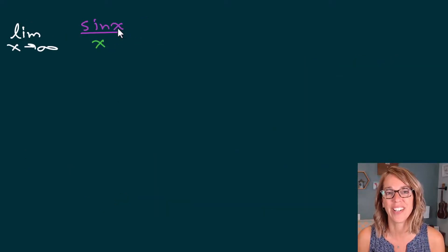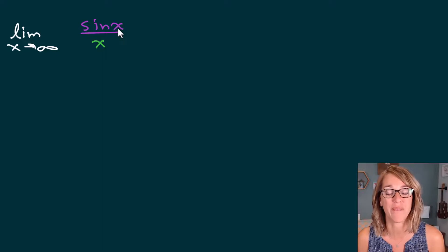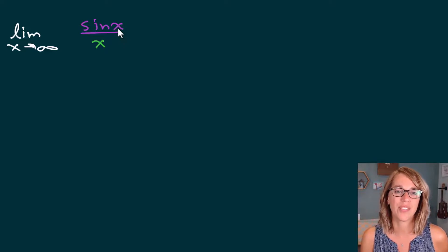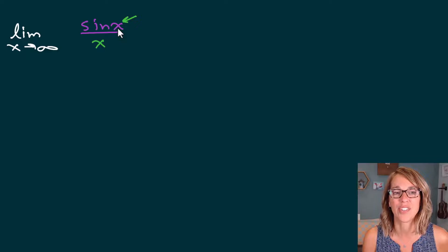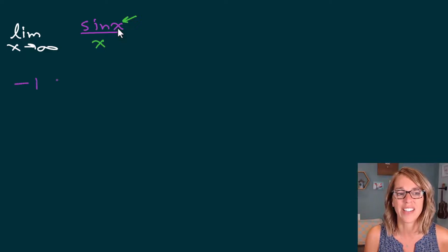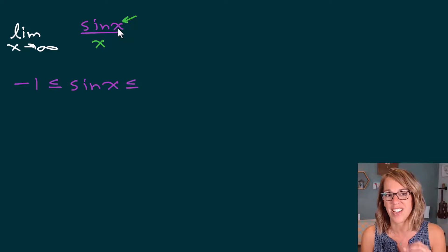In this next one we're looking at a really common limit — this is probably one you would just want to have memorized, but we can easily verify it with the squeeze theorem. I'm looking at the limit as x goes to infinity, and I've got a sine x in here, which is really nice. I know that sine of x is sandwiched between negative one and one. This is a really common way to start these problems if you've got a sine or a cosine on the inside.